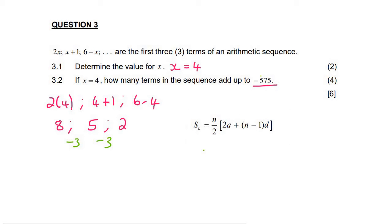So we can now use the sum formula of an arithmetic pattern. And they said that the answer must be minus 575 equals n over 2. We don't know what n is, because we don't know how many terms. And then we can say 2. Now a is 8, n we don't know, and the common difference is minus 3.